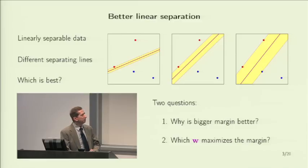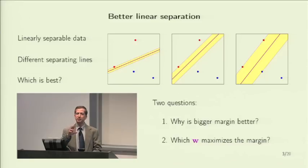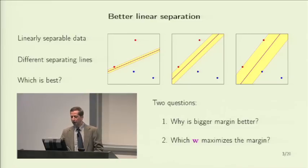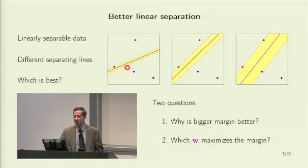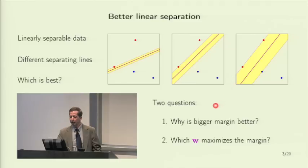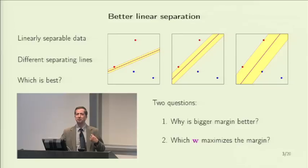It is quite intuitive that the bigger margin is better, because think of a process that is generating the data with noise. If you have the bigger margin, the chances are the new point will still be on the correct side of the line. Whereas with a thin margin, there is a chance that the next red point will be here and it will be misclassified. So it stands to logic that the bigger margin is better, and now we are going to argue that the bigger margin is better for a reason that relates to our VC analysis.